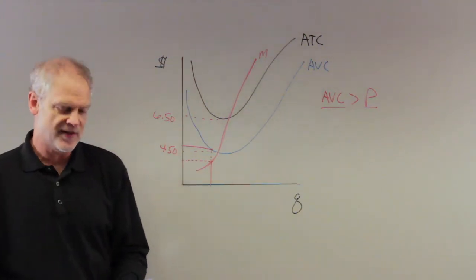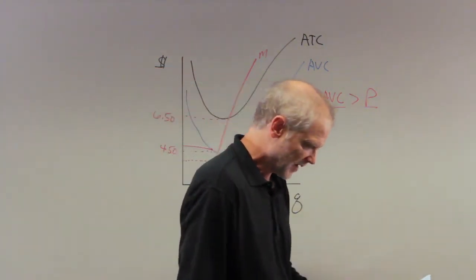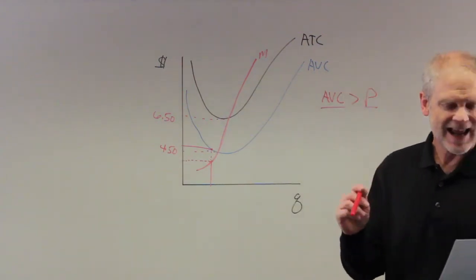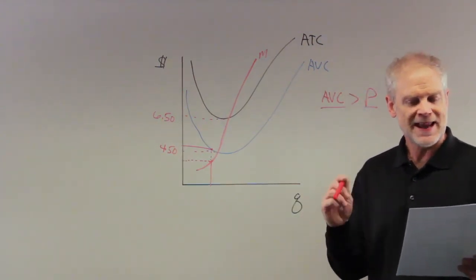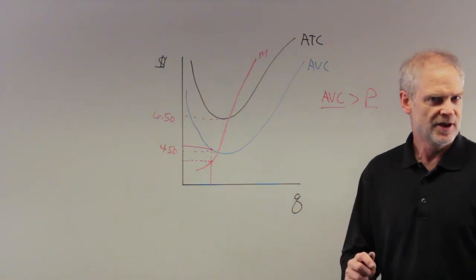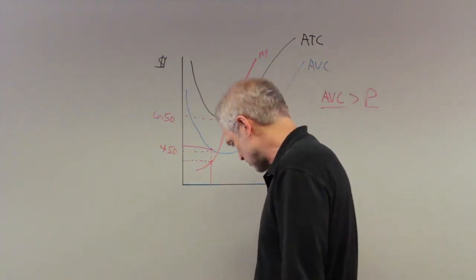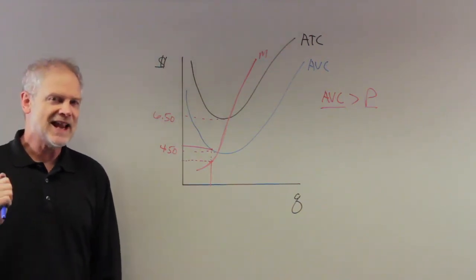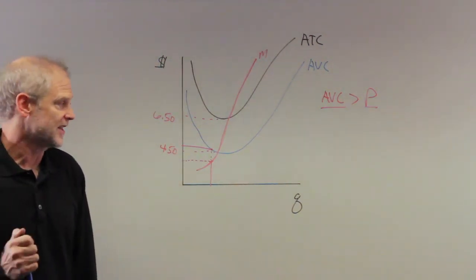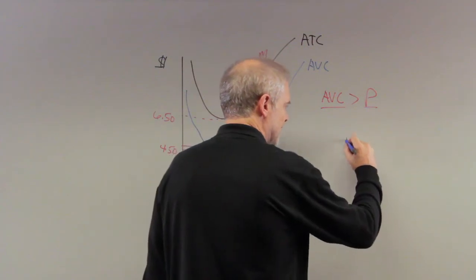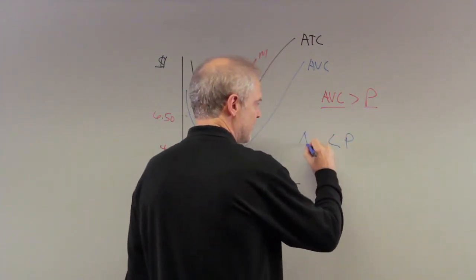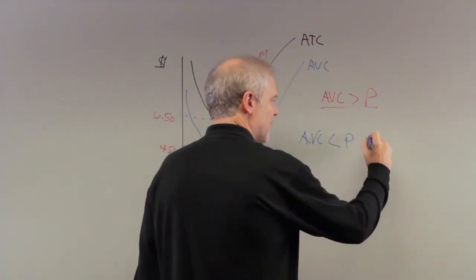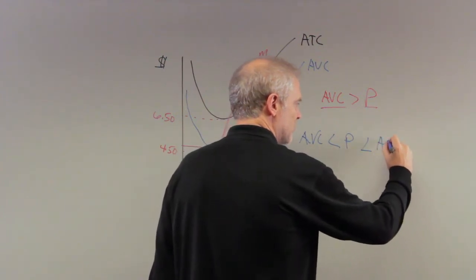So the answer has to be C, they're going to shut down because, again, price has fallen below their average variable cost. Now, the next question is related to that, so let me continue with this. Number four, the firm will earn a negative economic profit but remain in business in the short run. So here's a situation that I was just kind of discussing.